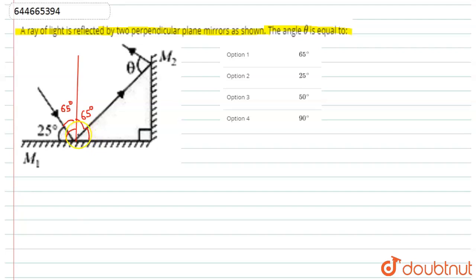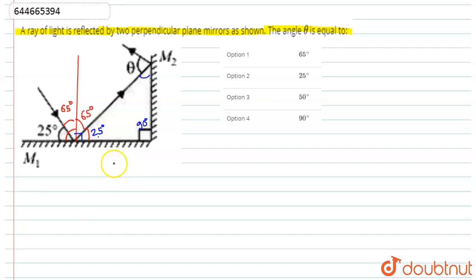Now we can find the next angle. This is 90 degrees, and since this part is 65 degrees, this angle is 25 degrees. In this triangle, we have 25 degrees and 90 degrees, so 90 plus 25 equals 115, and 180 minus 115 gives us 65 degrees.